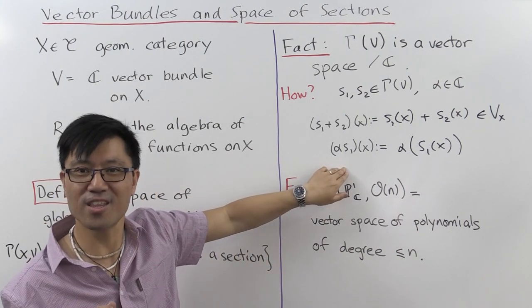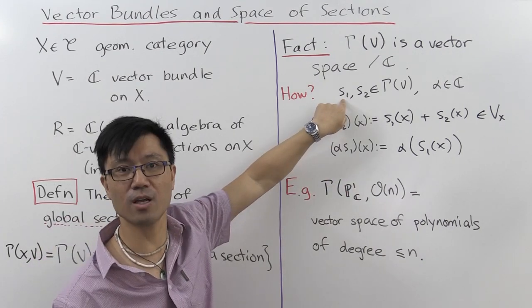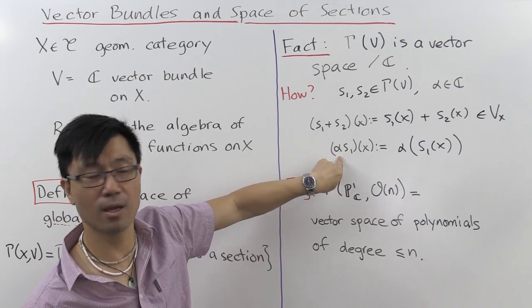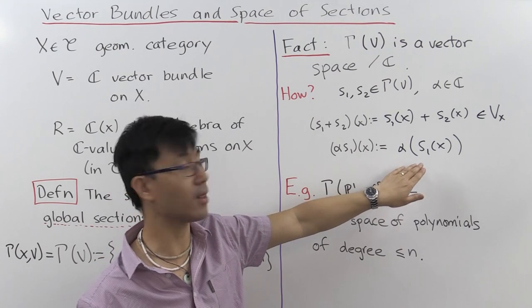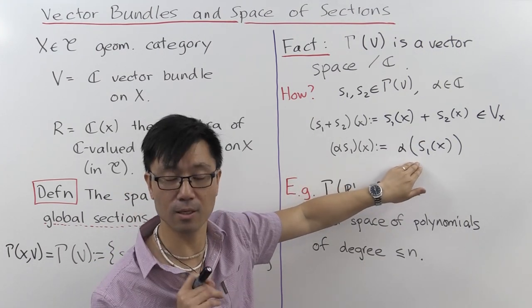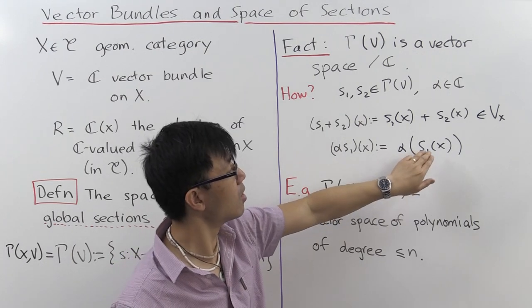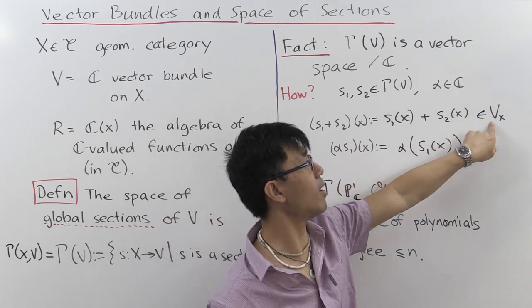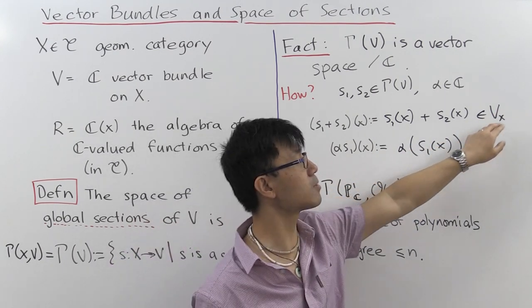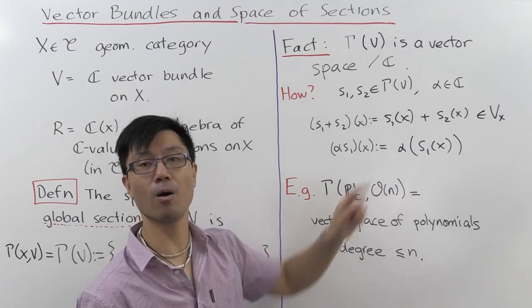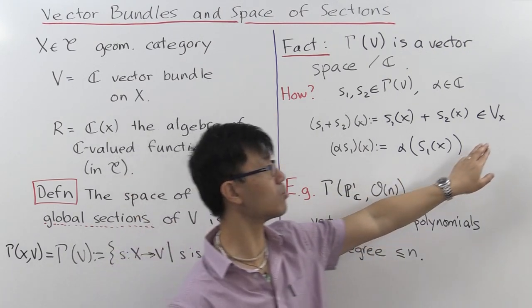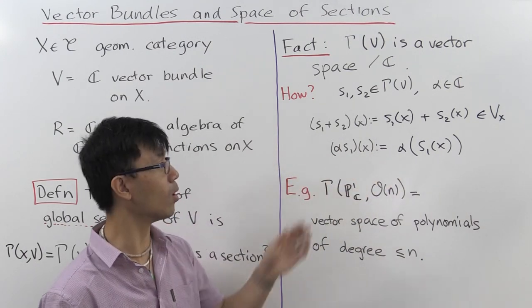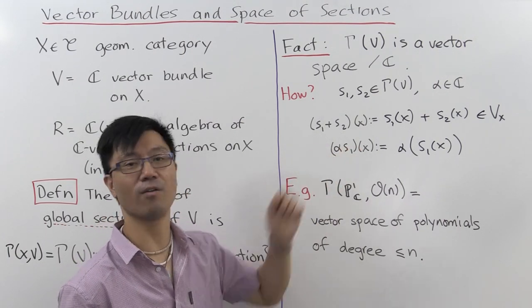What about scalar multiplication? Let's try the same thing. If you have a section S1, can you scalar multiply by some complex number alpha? We mimic the definition for functions: you look at S1(x), which is an element of my vector space VX. Since you're inside a complex vector space, you can scale by a complex number alpha to get a new vector inside here. And it's not difficult to see that gives you a well-defined global section alpha·S1.